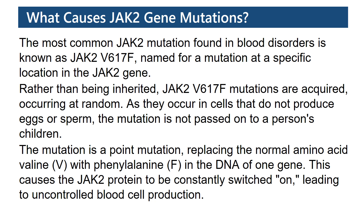Rather than being inherited, JAK2-V617F mutations are acquired, occurring at random, as they occur in cells that do not produce eggs or sperm. The mutation is not passed on to a person's children.